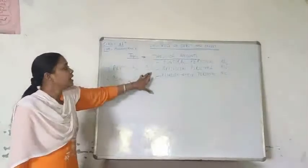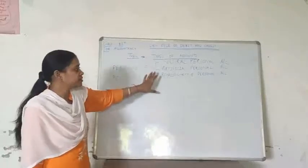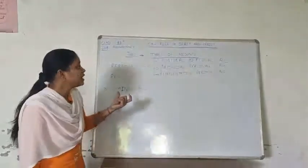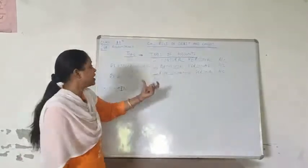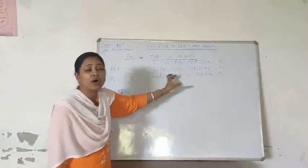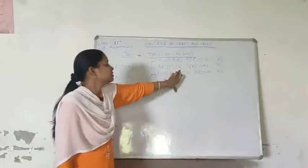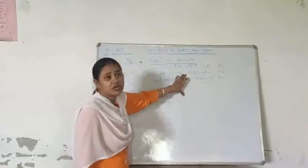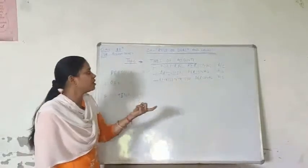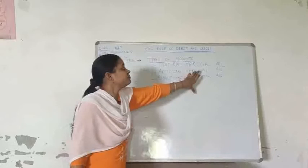Second is artificial personal account. Artificial personal account is the account in which we involve firms and companies — artificial firms which define the group of an artificial company or firm. For example, any company like Zero Company — this is all artificial personal account.